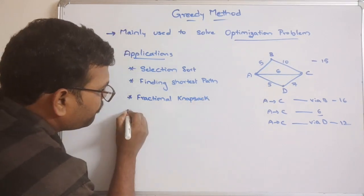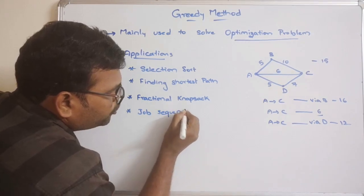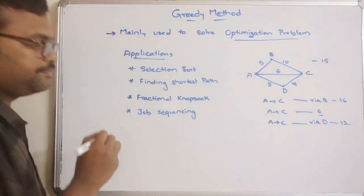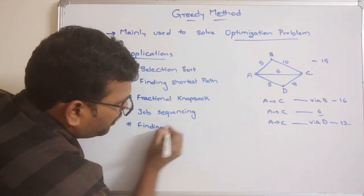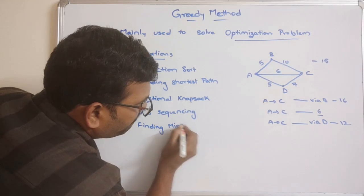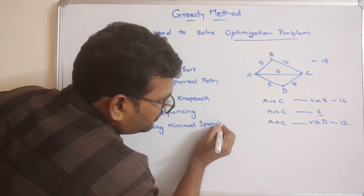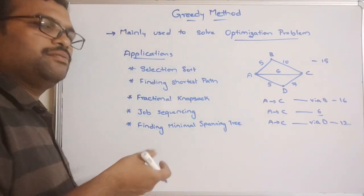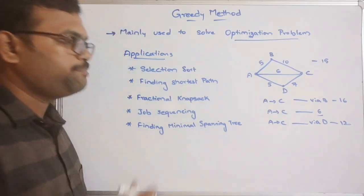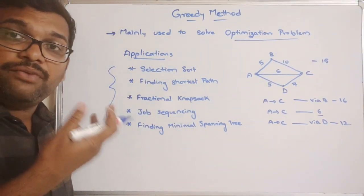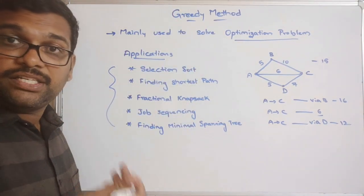Other applications of the greedy method include job sequencing and finding the minimum spanning tree. For minimum spanning tree, there are two approaches using Kruskal's or Prim's algorithm. These are the key applications where we use the greedy method, and in further sessions we will see each one by one — how to apply the greedy method and find the solution.